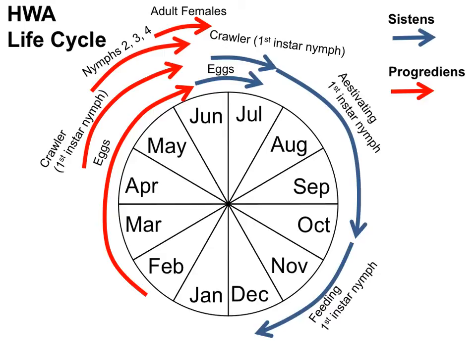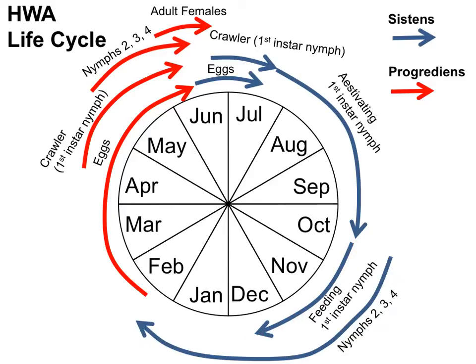Once the first instar nymphs wake up in about mid-October, they begin feeding and continue developing. The sistens generation then goes through three more nymph stages: the second, third, and fourth instar nymphs. The mechanism for how the sistens generation survives, feeds, grows, and develops over winter is not known. The adult sistens females start maturing by February and then begin laying their eggs in mid-February, starting the progrediens generation over again, and the cycle continues.